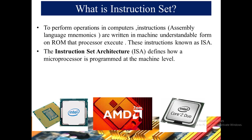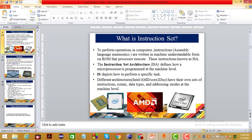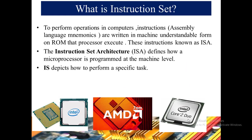The Instruction Set Architecture defines how a microprocessor is programmed at the machine level. A processor has to perform multiple tasks — for example, fetching data from memory, executing instructions, decoding instructions, and writing back instructions to memory. The instruction set depicts how to perform a specific task according to the instructions given by the software.